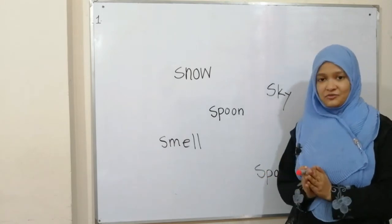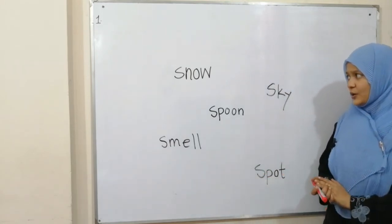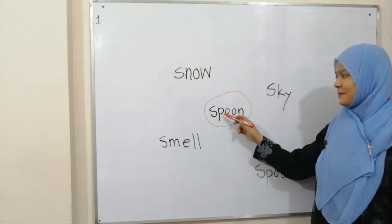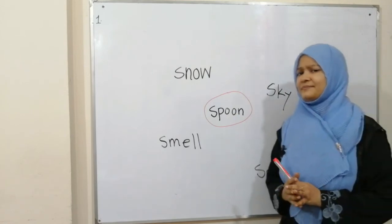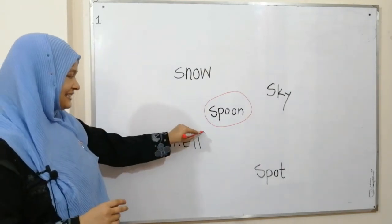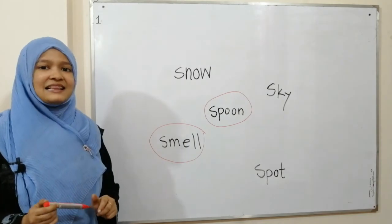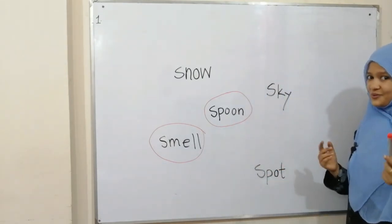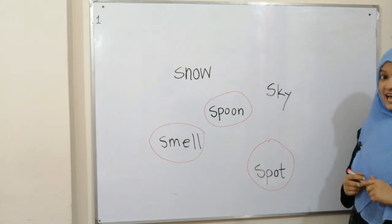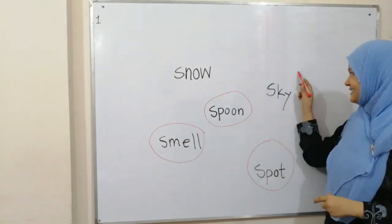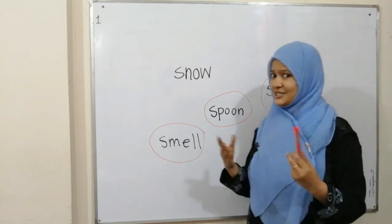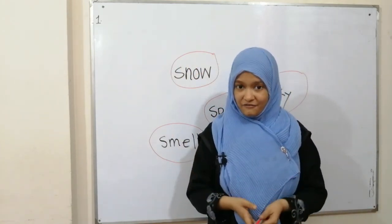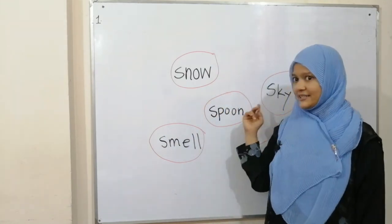After reading, it's U-turn time. The teacher has written the blending sounds on the board — you will tell me where each word is. Spoon — where is it? Very good! Smell — where is it? Well done! Spot — where is it? Very good! Sky — where is it? And the last one: snow, snow. Thank you, you have answered very nicely.